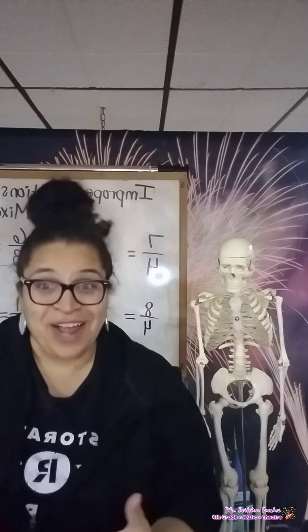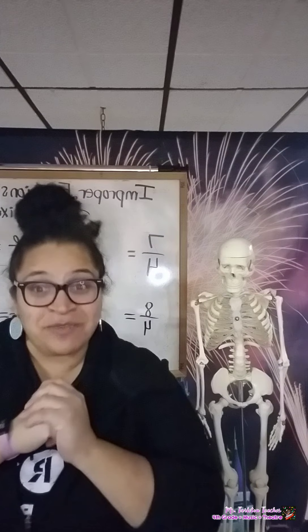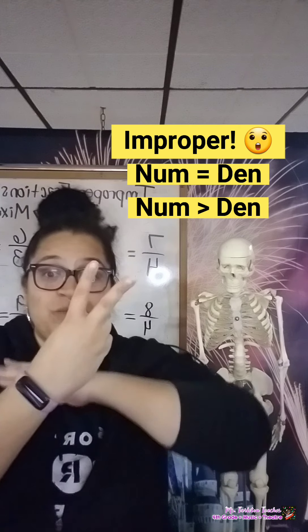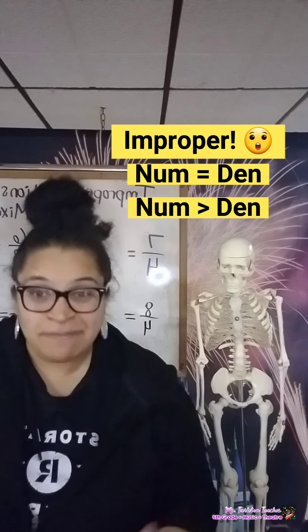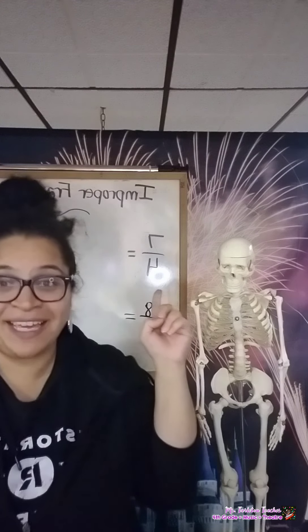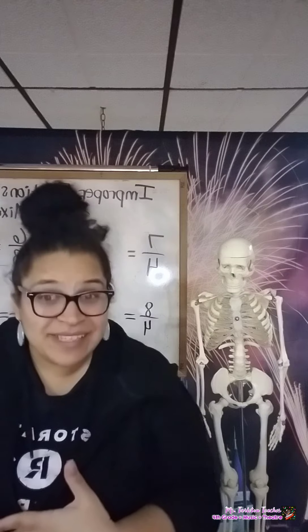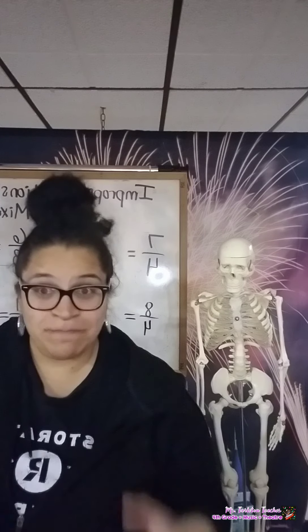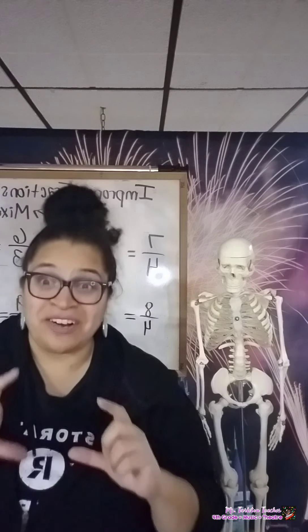Well, what makes a fraction improper? An improper fraction is any fraction where the numerator, the top term, and the denominator are either equal to each other — so if I had 2 over 2, that would be improper — or your numerator is greater than your denominator. For example, 7 over 4: the numerator 7 is larger than the denominator 4. So improper fractions are parts over wholes where the numerator and denominator are either the same number, or the numerator is greater than the denominator.